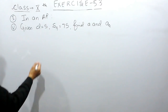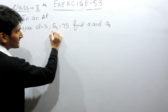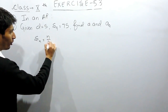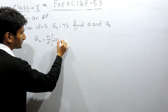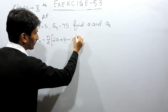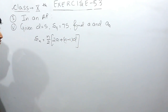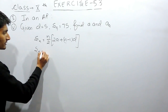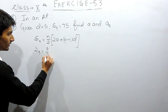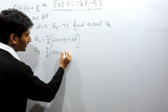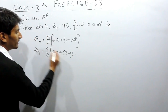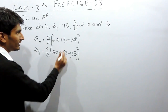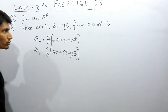The common difference and the sum of 9 terms are given. To find the sum of n terms, we have the formula: sum of n terms equals n by 2 times (2a plus n minus 1 into d). Here the number of terms is 9, the common difference d is 5, and the sum S9 is 75.